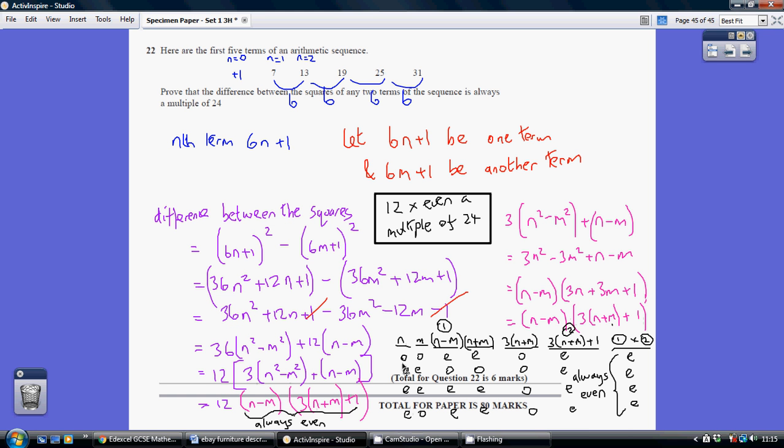So if we've got N and M both being odd, when we take one away from the other, it's always even. When we add together, it's always even. Three lots of an even is always going to be odd. And three lots of this plus one is always going to be even. And an odd times an even is an even.